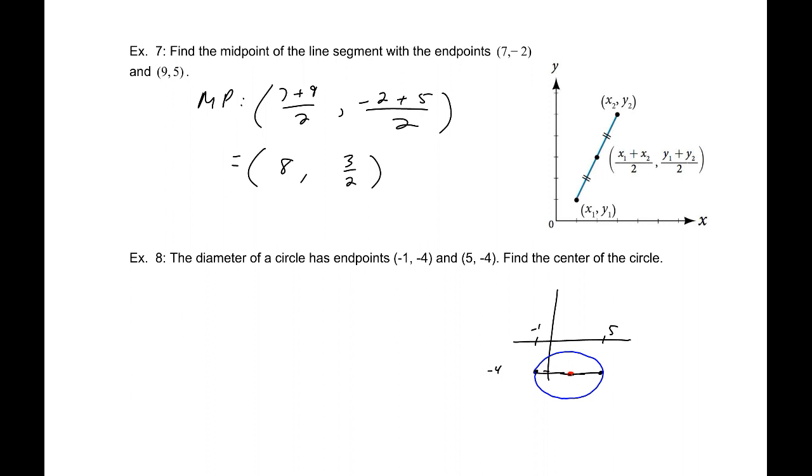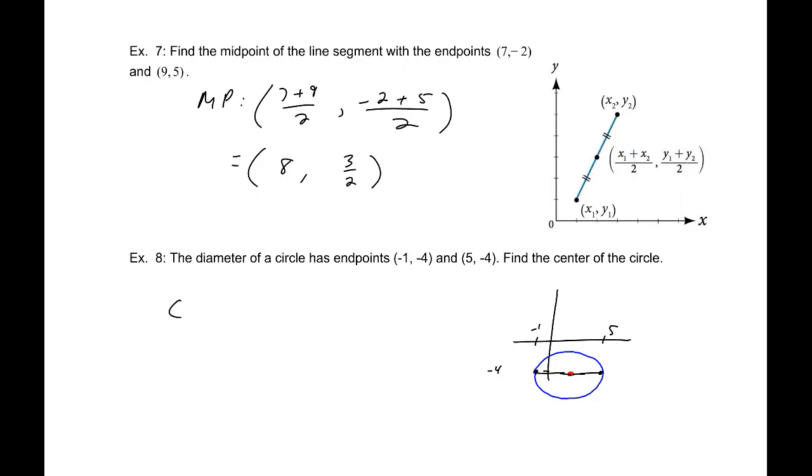That is the midpoint between those two coordinates. So, our center is going to be equal to, let's make that larger, average of our x values so (-1 + 5)/2 and (-4 + -4)/2. That would be 2 comma -4.